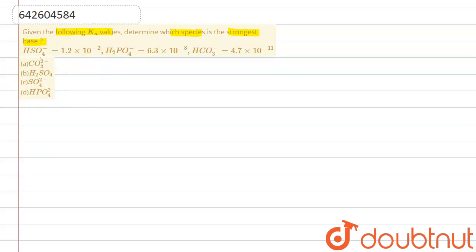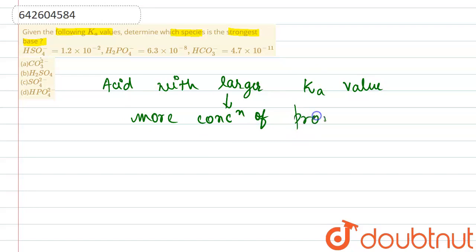First of all, we are provided with the acid dissociation constant values. We know that the acid with larger acid dissociation constant, that is Ka value, will have more concentration of products at equilibrium.